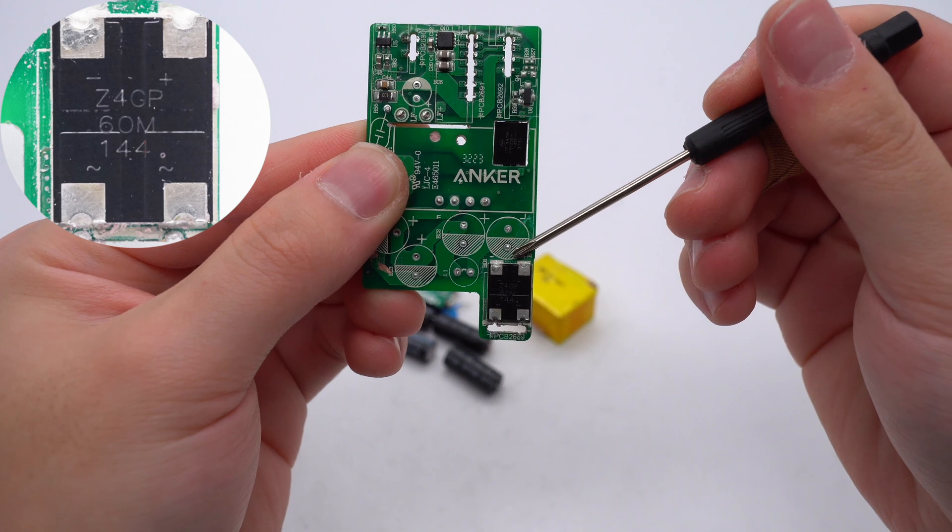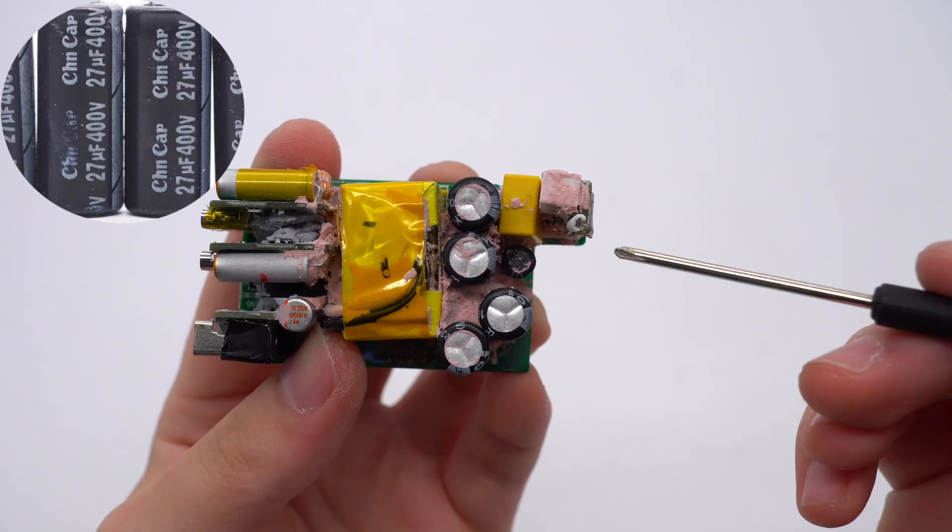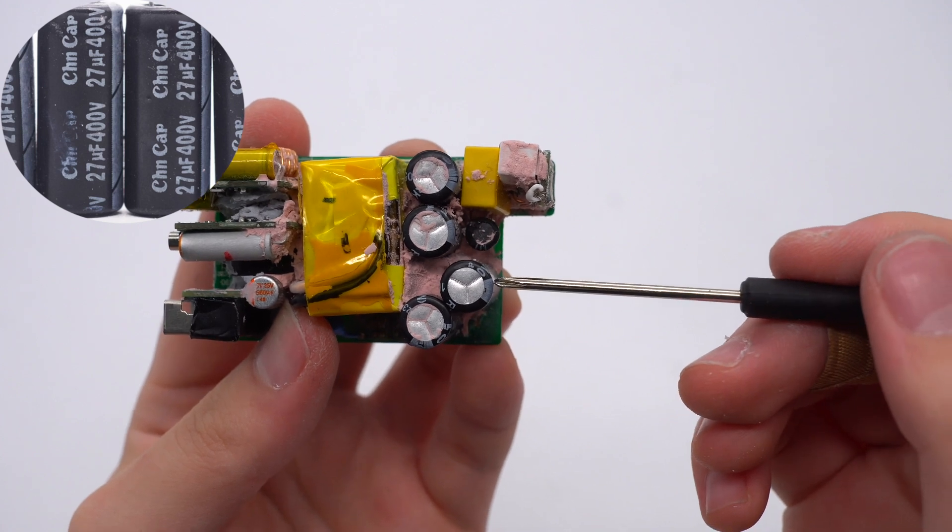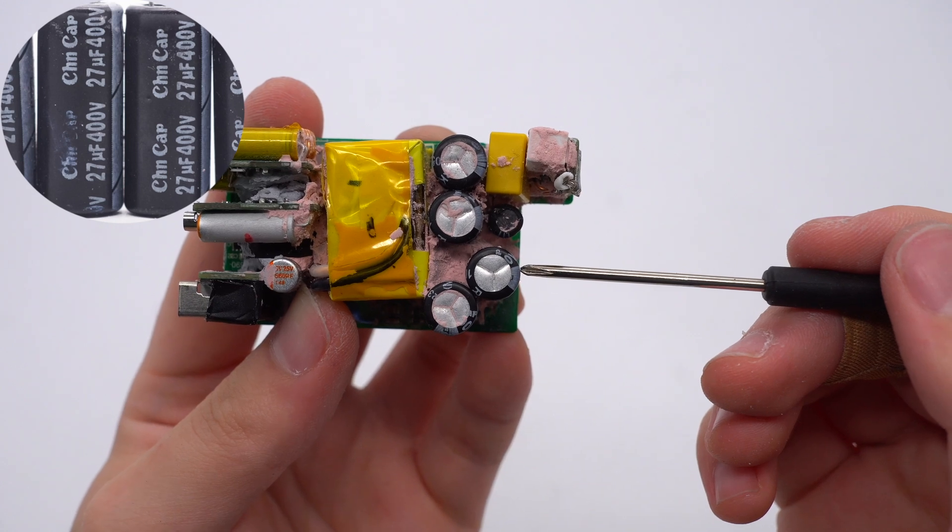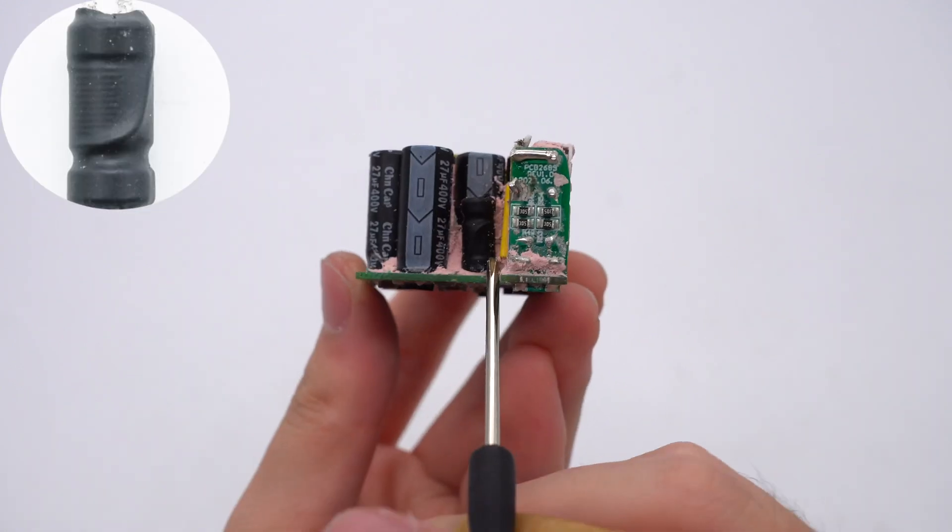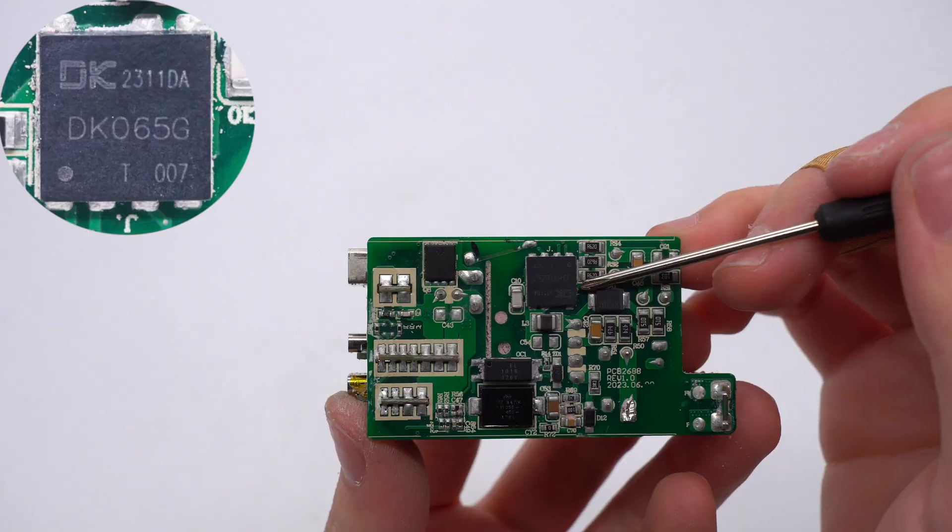The bridge rectifier is from Zowie, 1000V, 6A. These four electrolytic capacitors for input filtering are from CHNGCM. The total capacity is 108μF, 27μF, 400V for each. The differential mode choke is insulated by heat shrinkable tubing.